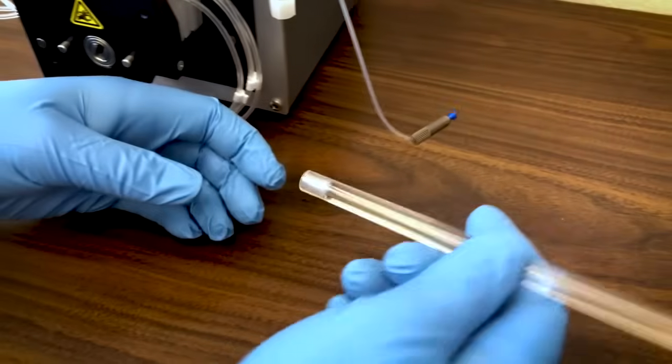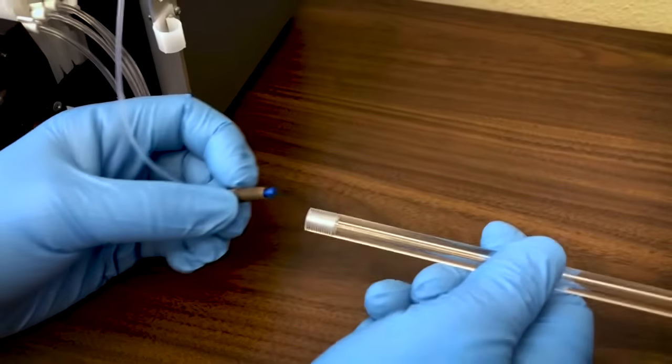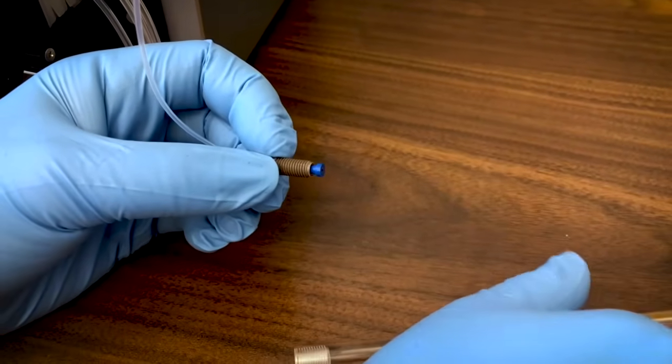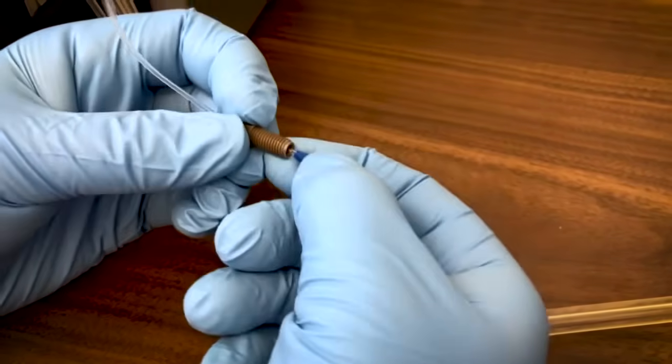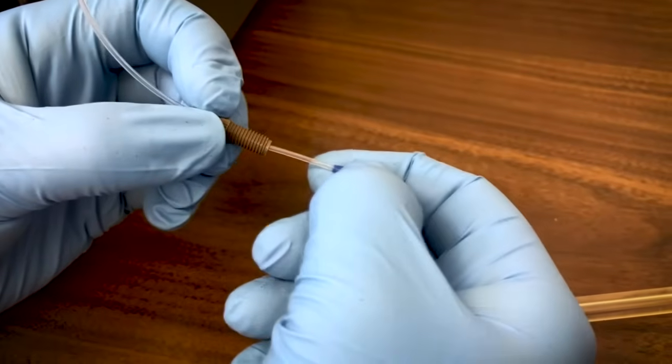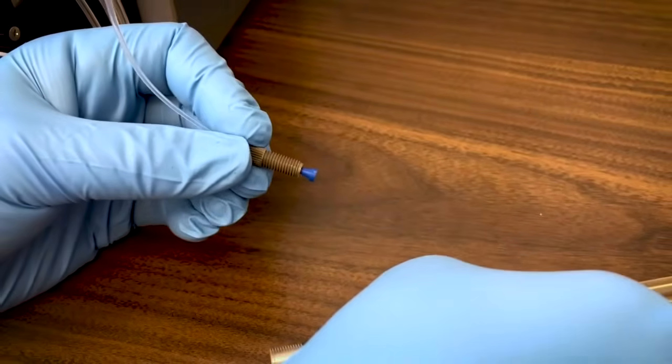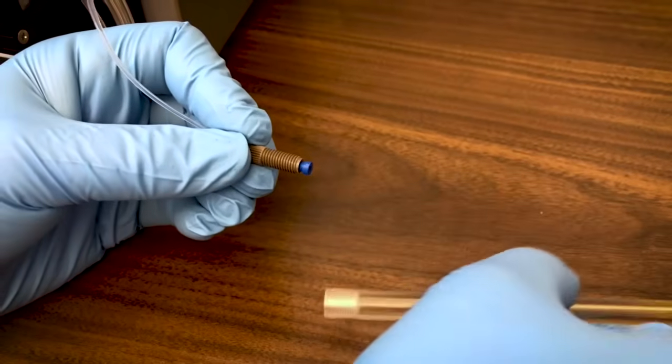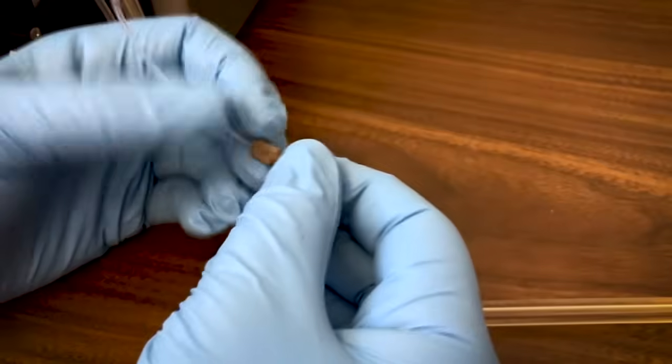Screw the tubing onto the bottom of the column first. It's bi-directional, so use whichever end you removed the cap from. If the ferrule is stuck, you can use your finger or the inside of the threaded port to break the ferrule away from the nut so it will turn freely, and then simply screw it back into the column.